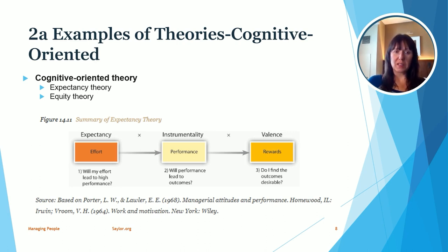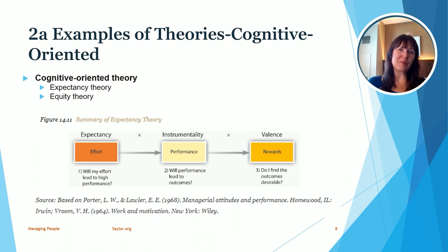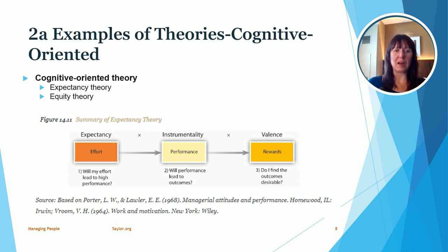The equity theory is another cognitive oriented theory focused on comparison with others. If we put in a lot of work but someone else calls in sick frequently or doesn't put in the same effort, we would be disappointed to find out they are getting paid more than us. When we think of cognitive oriented theories, we want to think about the amount of effort employees are putting in and how they're being rewarded, but also in terms of fairness compared to others within our organization.